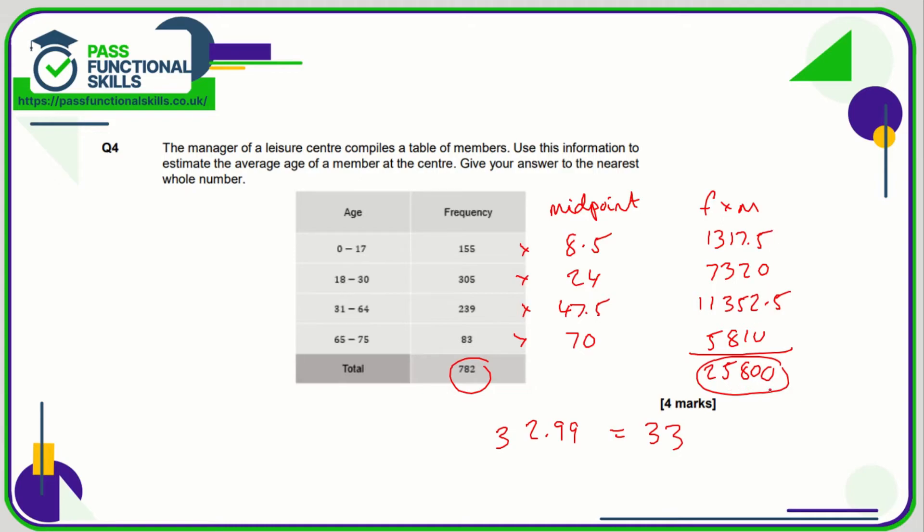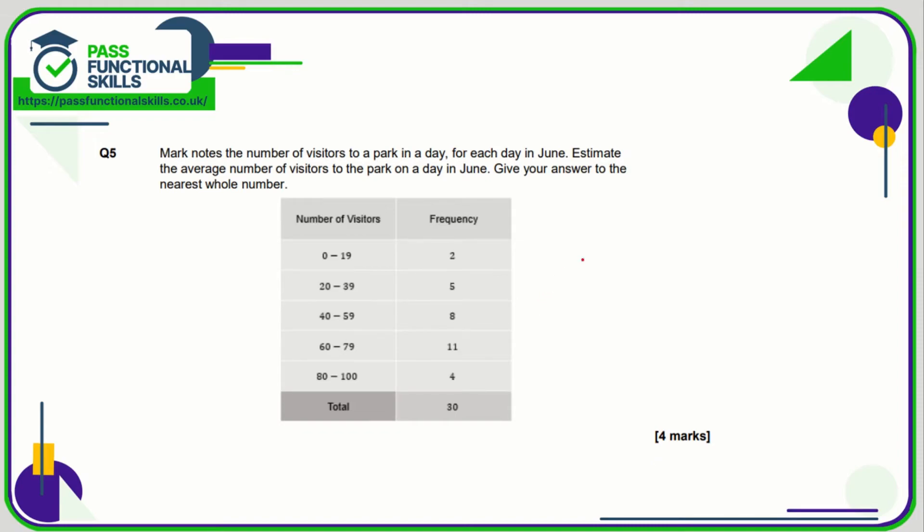So therefore the total age of all of them is these numbers added together. That's what the 25,800 is. And then the mean age is the total age divided by the number of leisure center members, and that's where we get our final answer from. Really does help if you understand why you're doing some of these calculations.